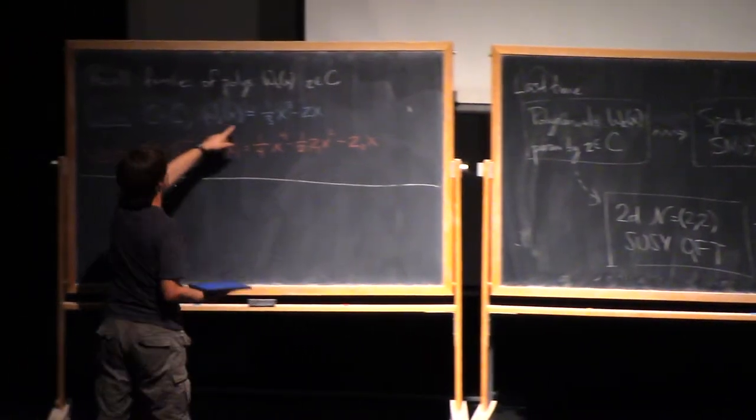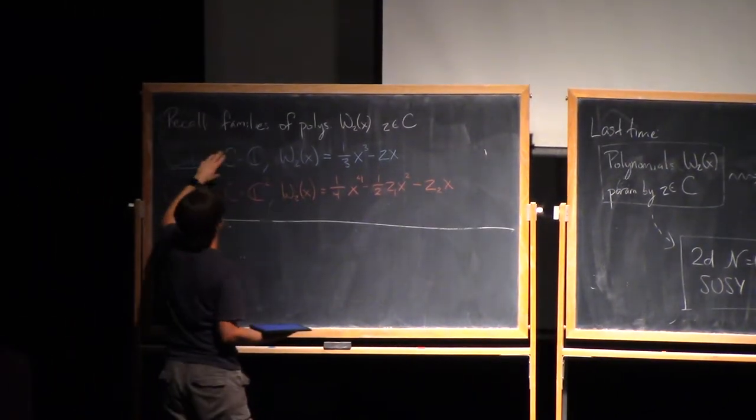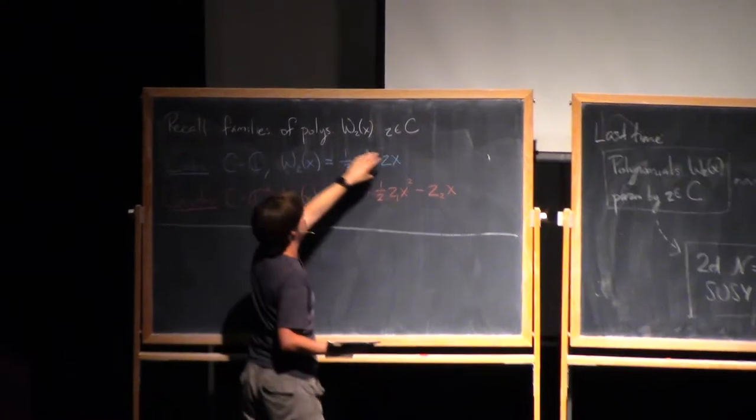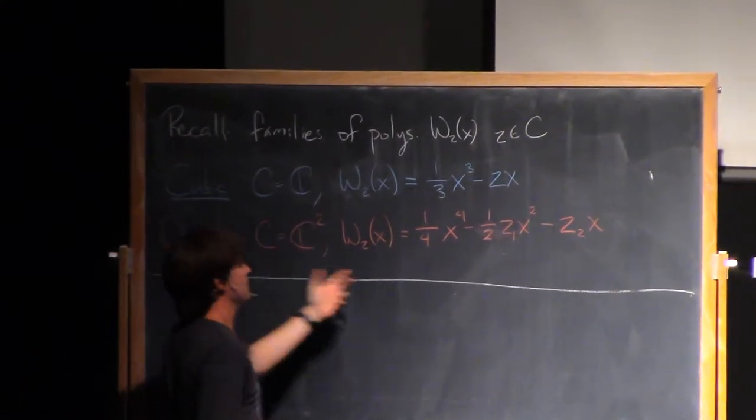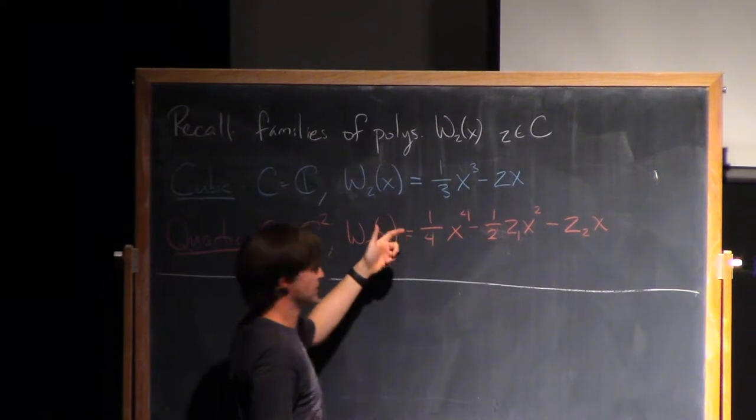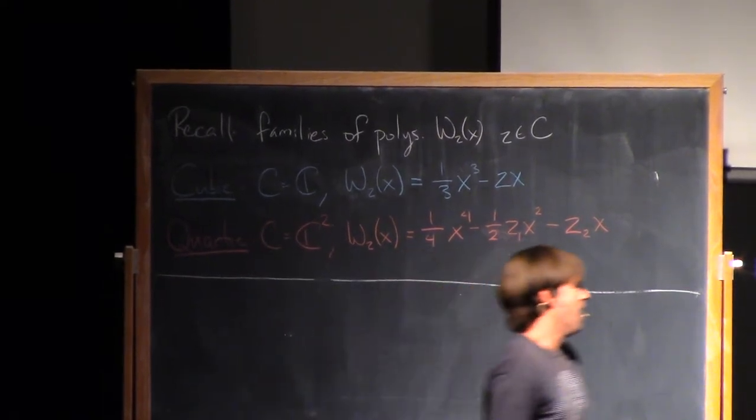Parameterized by either a single number z, and I had an example which was just a family of cubic polynomials, or parameterized by two numbers z1 and z2, and we had a family of quartic polynomials like that. In any case, once we had this family of polynomials...